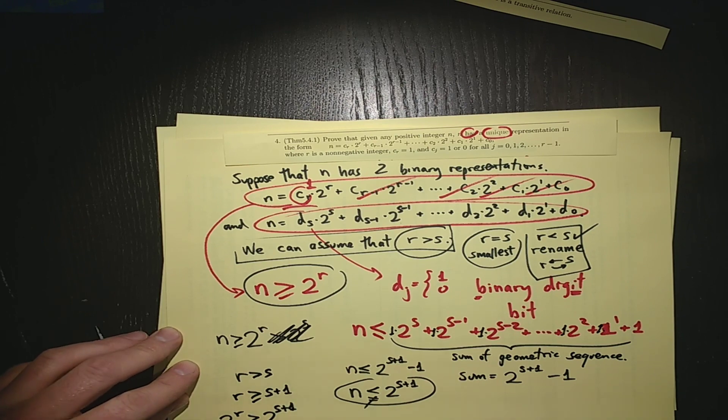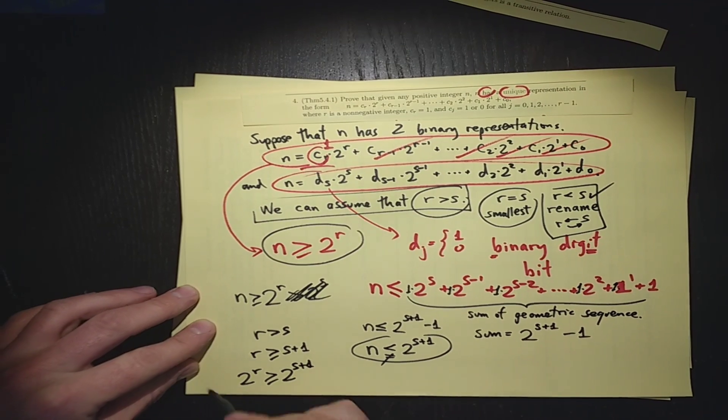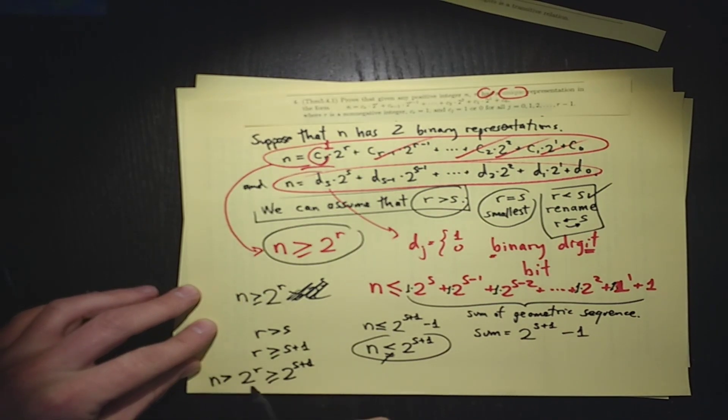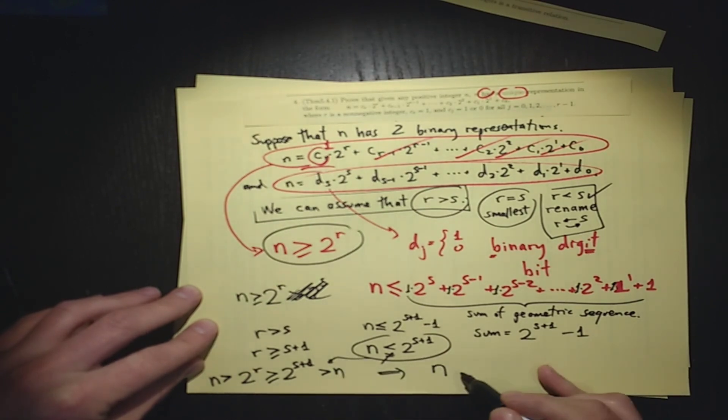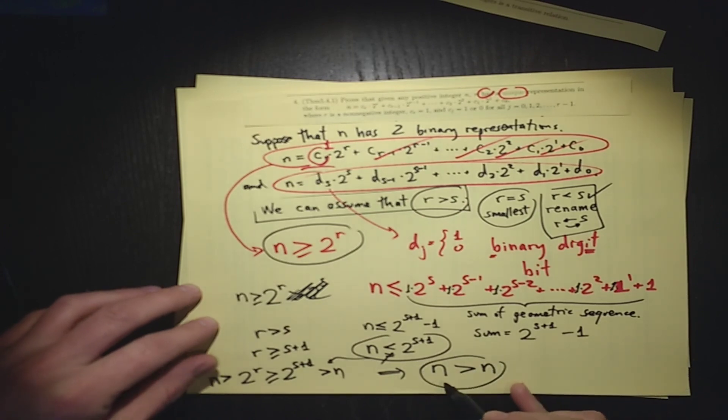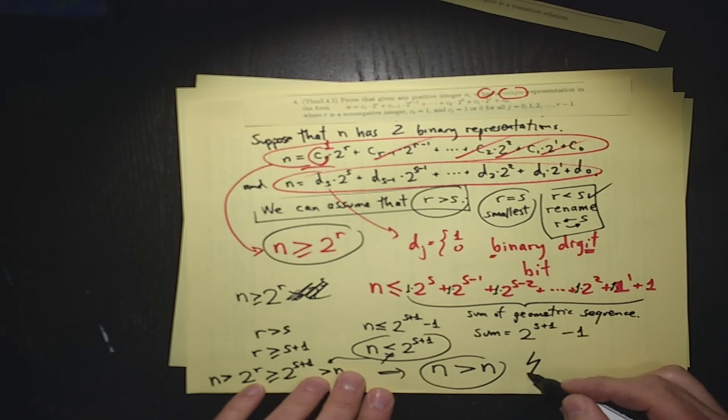So that means that n, n is bigger than 2 to the r. 2 to the r is at least as big as 2 to the s plus 1, but that is bigger than n, if we turn this around, and that means that this number n is bigger than itself. We have a number that is bigger than itself, and that can't possibly happen, that's a contradiction.